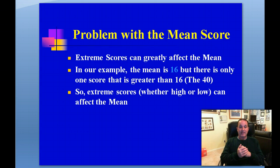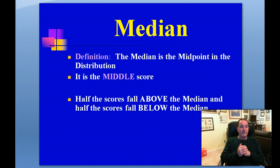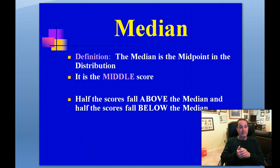Because extremes can impact the mean score, we have what we call the median — our next measure of central tendency. The median is simply the midpoint in the distribution. It's the middle score. Half the scores fall above the median, and half the scores fall below the median. That middle score is the median.